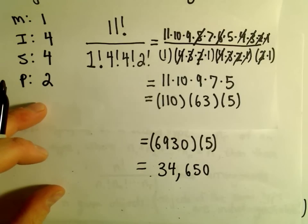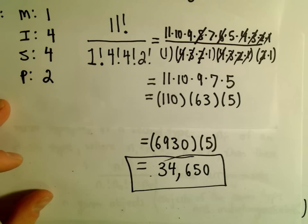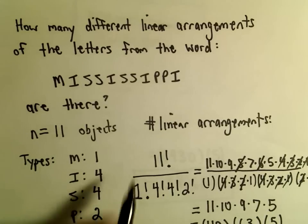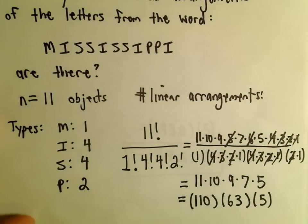Let me type this in here real quick, so 6,930 times 5. 34,650, perfect. All right, so it looks like there are 34,650 different linear combinations of the word Mississippi. Nothing too crazy here, just another formula to remember.